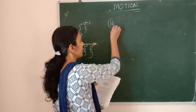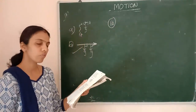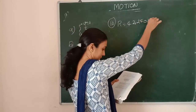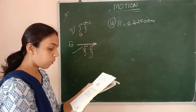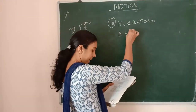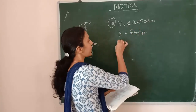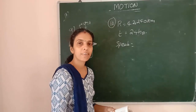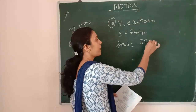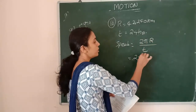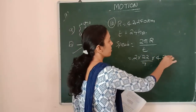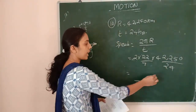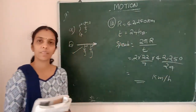Question ten: An artificial satellite is moving in a circular orbit of radius 42,250 kilometers, and it takes 24 hours to revolve around the earth. To find speed, use speed equals total distance divided by total time. The distance for one orbit is 2πr. So speed equals 2 times 22/7 times 42,250 divided by 24, which gives the answer in kilometers per hour.